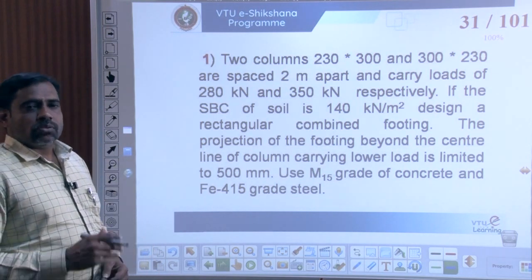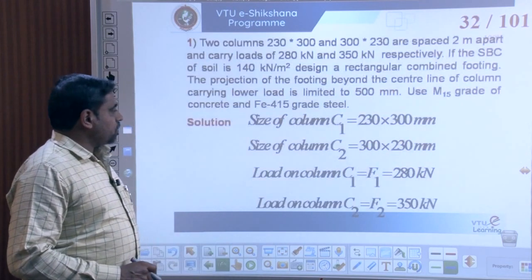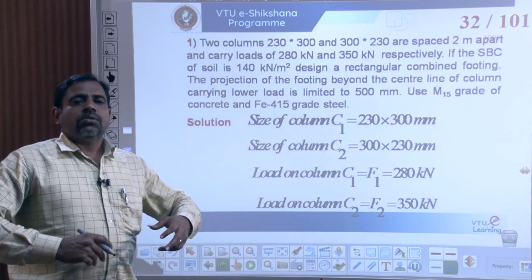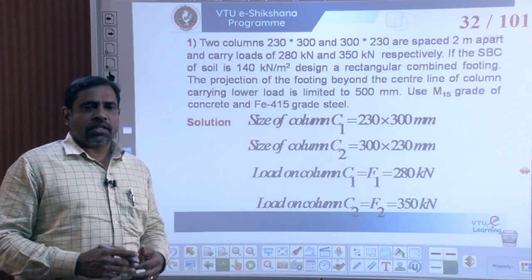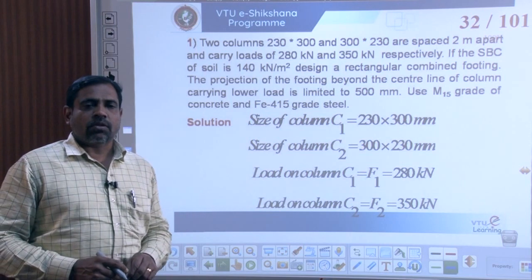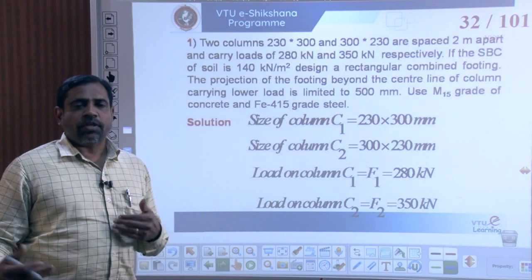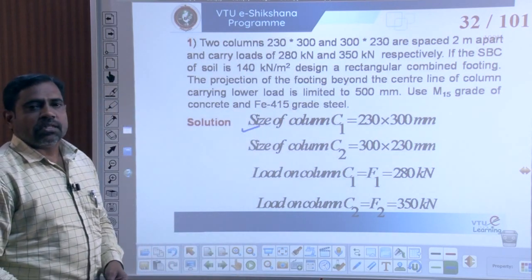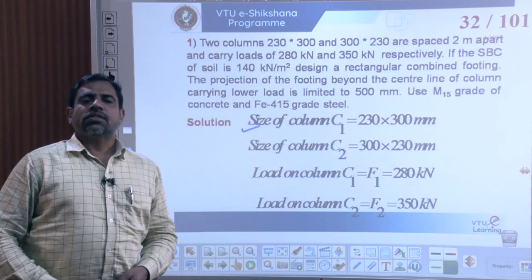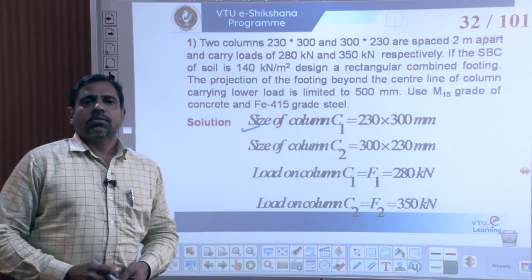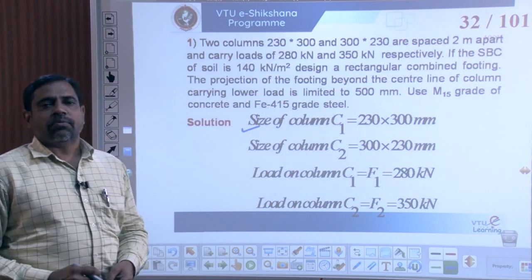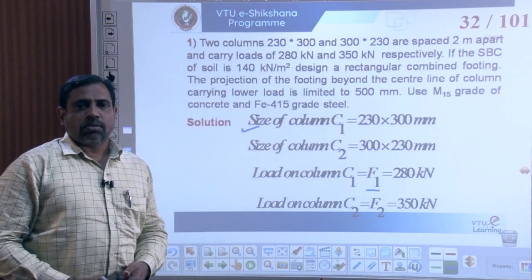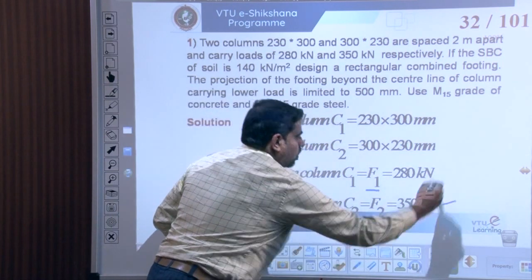To design the combined footing, let us first note down the design parameters. The size of column 1 is 230×300 mm and column 2 is 300×230 mm. The load on column 1 is F1 = 280 kN and the load on column 2 is F2 = 350 kN.